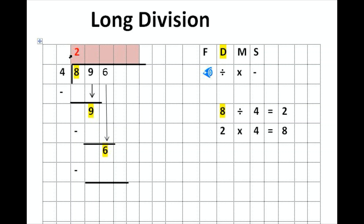After divide, we multiply. We take the division answer and multiply it by 4: 2 times 4 is 8. Our multiplication answer gets written under the focus number. This means there are two 4s in 8. When I subtract 8 minus 8, I have a remainder of 0 — there are no remainders. 4 goes into 8 exactly 2 times. The remainder of 0 gets written next to my second focus number, which is 9. Because the remainder is 0, the focus number remains 9.